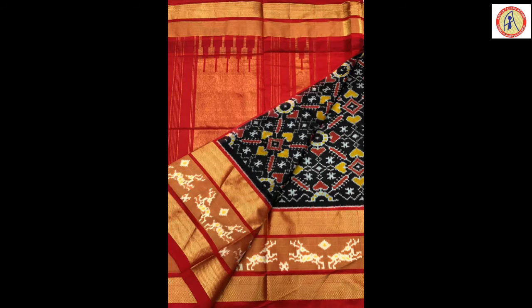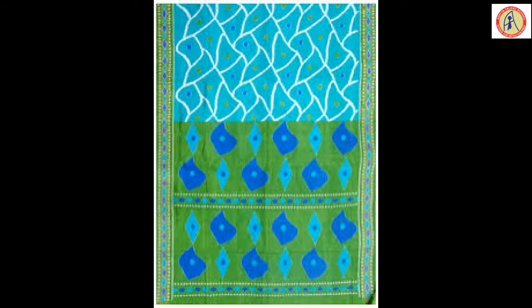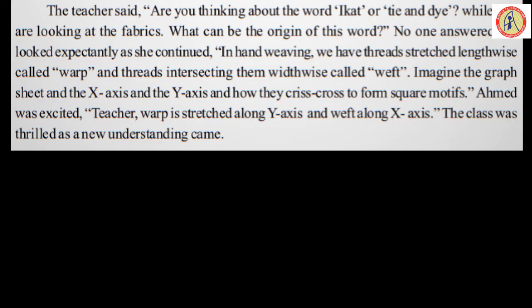Usually you might have observed your mother's sarees and grandmother's sarees — different silk sarees, cotton sarees — and sometimes you will be attracted by the border or leaf designs or color. That is nothing but called mesmerizing. The teacher said: Are you thinking about the word ikat or tie and dye while looking at the fabrics? What could be the origin of this word? No one answered but looked expectantly. In hand weaving, we have threads stretched lengthwise called warp and threads intersecting them widthwise called weft. Imagine a graph sheet — the x axis and y axis — and how they criss-cross to form a square motif.